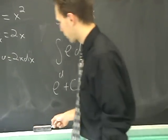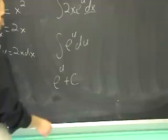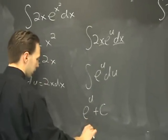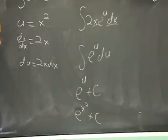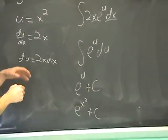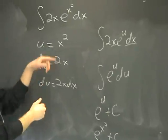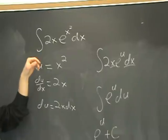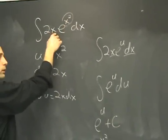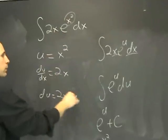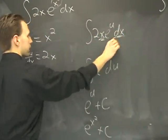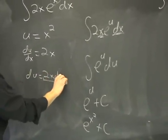The final step is to replace u with what you had originally chosen it to be. So the final answer is e to the x squared plus c. What was the key to doing this? Tip number one: the key is to pick u such that its derivative is somewhere else in the problem. We went with x squared because 2x is the derivative of x squared, and we were able to eliminate the x and the dx with what came up over here.